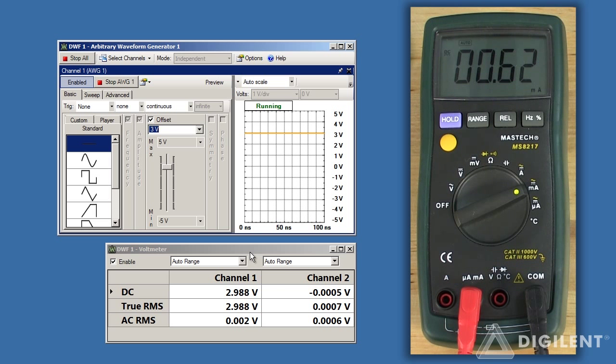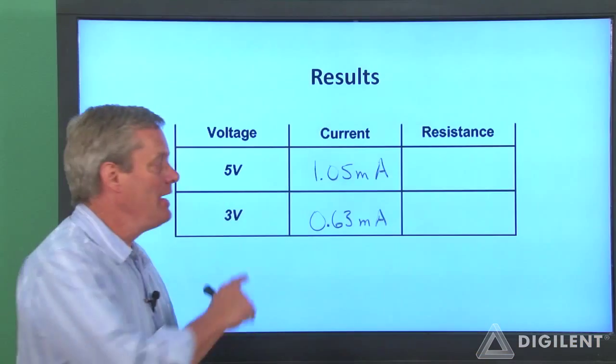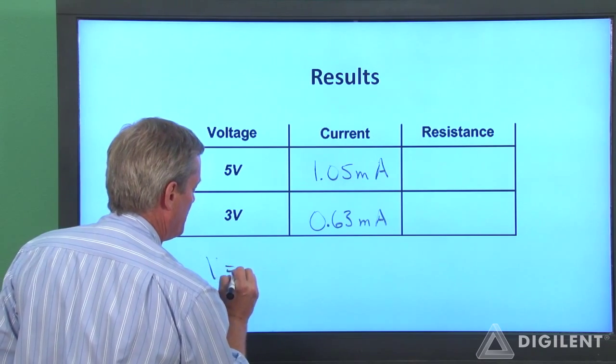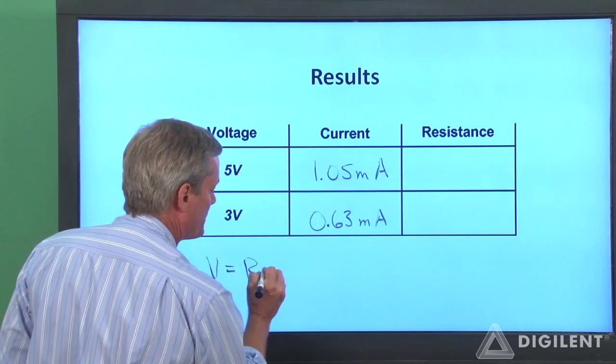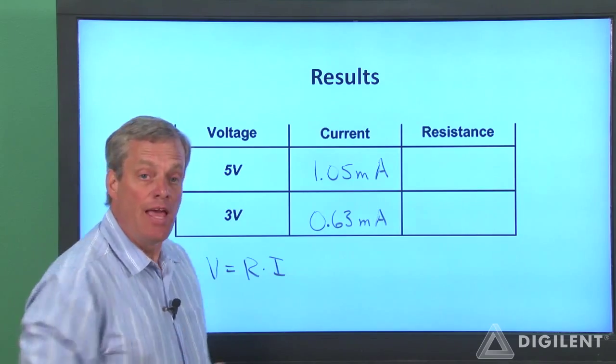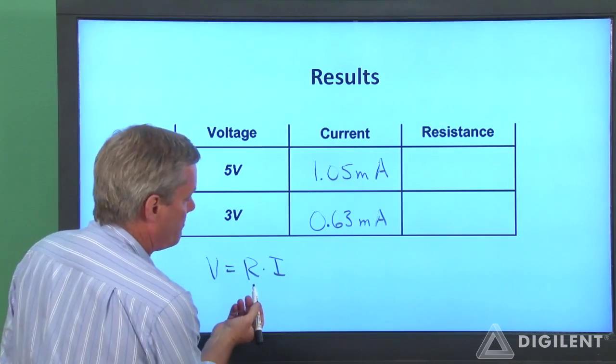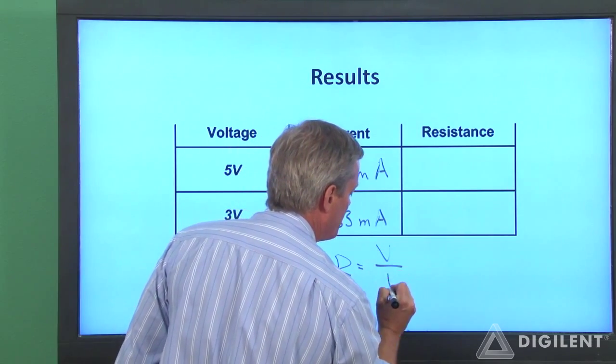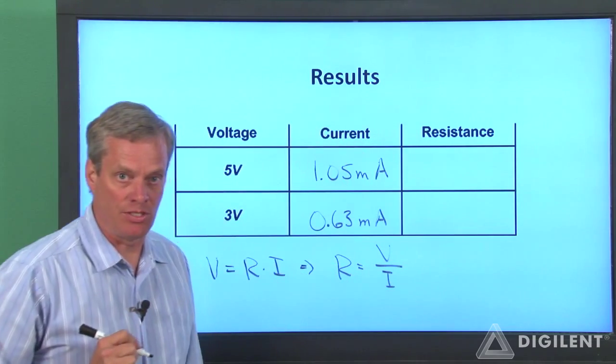Let's take a look at how these data do as far as predicting a resistance for this resistor. Here's our measured data. Ohm's law says that the voltage across the resistor is equal to the resistance times the current through the resistor. If I want to use this equation to estimate an unknown resistance, I can say that the resistance is the voltage across the resistor divided by the current through the resistor.